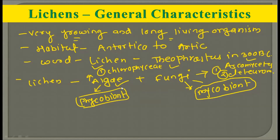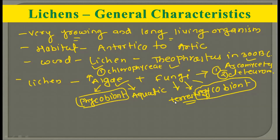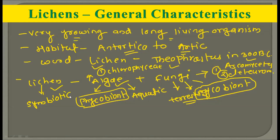Now, why do algae and fungi combine together, and what is the evolutionary significance? Algae typically have an aquatic habitat while fungi are generally terrestrial in nature — fungi have the ability to live on land while algae generally live in aquatic conditions. But lichens can be found from Antarctica to the Arctic, living in very extreme conditions. This tells us that the combination of algae and fungi — the lichen — has a symbiotic association, meaning both partners get benefited.